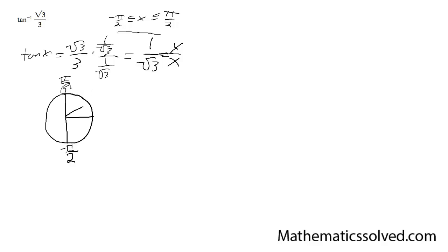Which means that this is going to be 1, and this is going to be root 3. And if you notice, this looks like a 30, 60, 90 triangle.